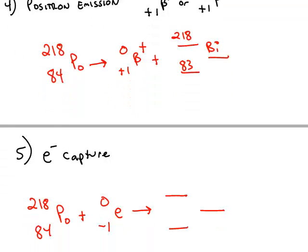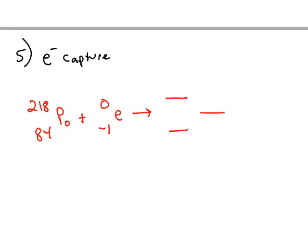The last type, the fifth type, is a little bit different. Instead of the nucleus emitting a particle, this time it's capturing a particle. If we capture an electron from the nucleus, now the electron, notice zero mass, negative 1 charge. So this is an electron being absorbed by the nucleus. So the reactant side, we now have two things and we can still figure out the product side exactly the same way.